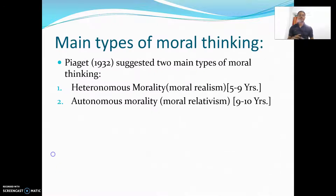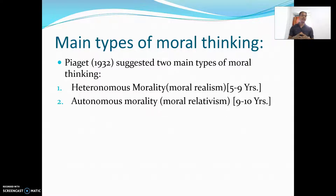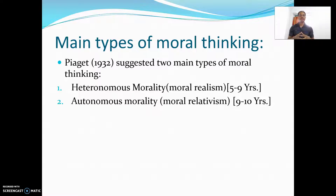From his exploratory research with children in the age group of five to ten, Piaget developed two main types of moral thinking and categorized them into two main headings. The first is heteronomous morality, otherwise known as moral realism, which applies from five to nine years. The second is autonomous morality, also called moral relativism, which ranges from nine to ten years.